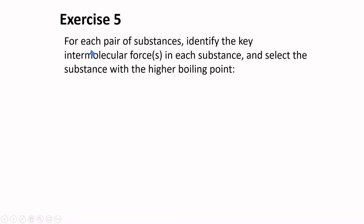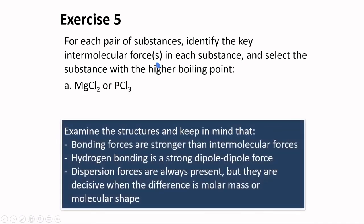Exercise 5: for each pair of substances, identify the key intermolecular forces in each substance and select the substance with the higher boiling point. Letter A: magnesium chloride or phosphorus trichloride. Magnesium chloride is an ionic substance, whereas phosphorus trichloride is a compound with molecules attracted to each other by van der Waals forces. Magnesium chloride has a higher boiling point compared to phosphorus trichloride by virtue of its ion-ion interaction.